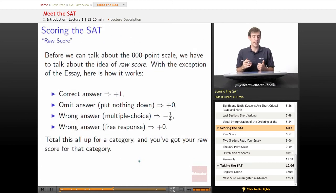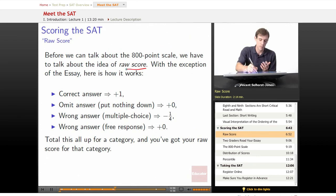Scoring the SAT. How do they turn how you do on it into that 800-point score, which becomes that 2,400-point score when they add all three of them up? Before we can talk about that, we have to talk about the idea of raw score. With the exception of the essay, it works like this: A correct answer gives you plus one point to your raw score. If you omit an answer, which means you put nothing down, you get nothing. That seems perfectly reasonable.